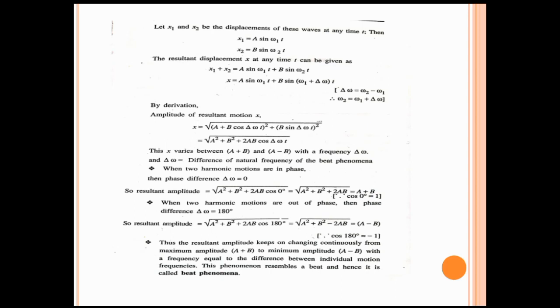So the resultant amplitude equals A + B when in phase, and A − B when out of phase. The resultant amplitude keeps on changing continuously from maximum amplitude A + B to minimum amplitude A − B with a frequency equal to the difference between the individual motion frequencies. This phenomenon resembles a beat, and hence it is called the beat phenomenon.